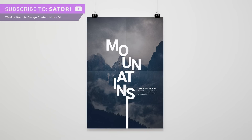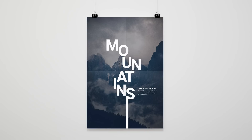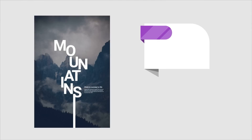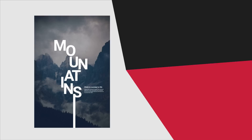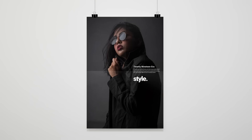Next, we're going to look at scatter typography as a focal point — this is somewhat trending in the design world right now and it's a really nice way to create a focal point with a degree of controlled chaos. On my design I've tried to represent the act of climbing by using the letters in a scattered orientation, which also represents mountains in the background. This effect works really well when overlaid on imagery and when it contrasts the background in a visually appealing manner.